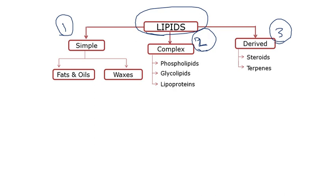Simple lipids include fats and oils, as well as waxes. Complex lipids include phospholipids, glycolipids, and lipoproteins. Derived lipids include steroids and terpenes. We will discuss each of these one by one.